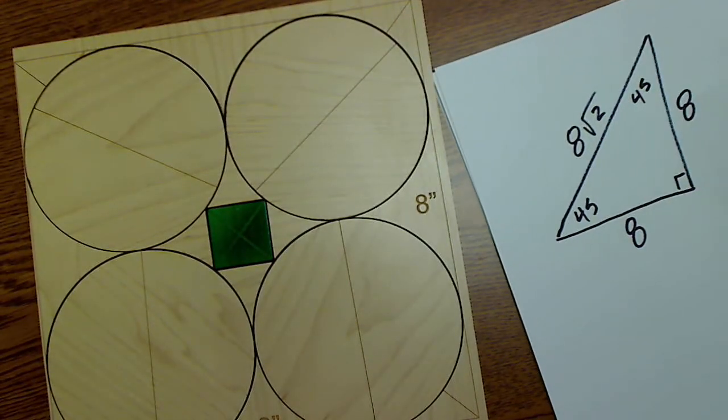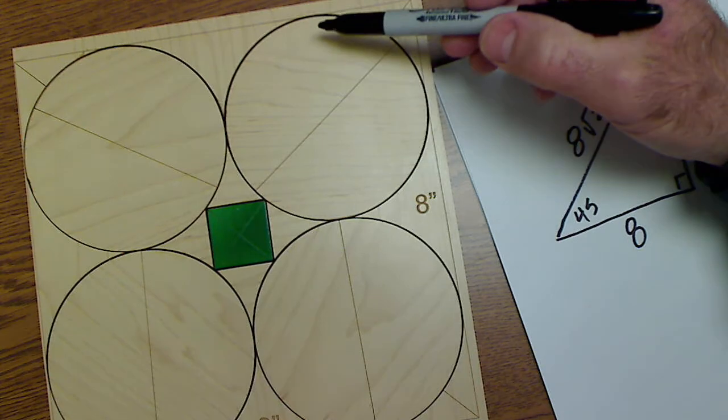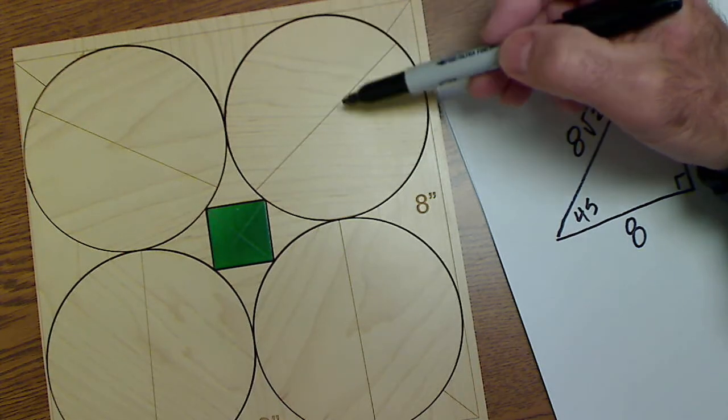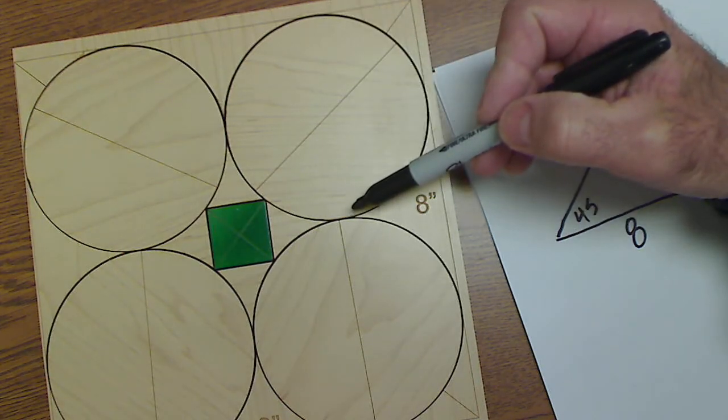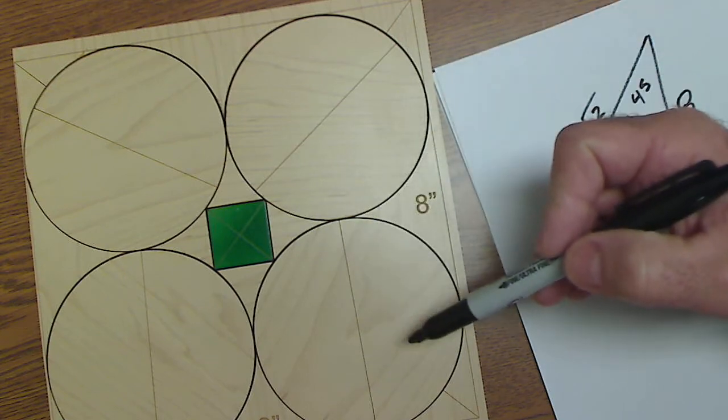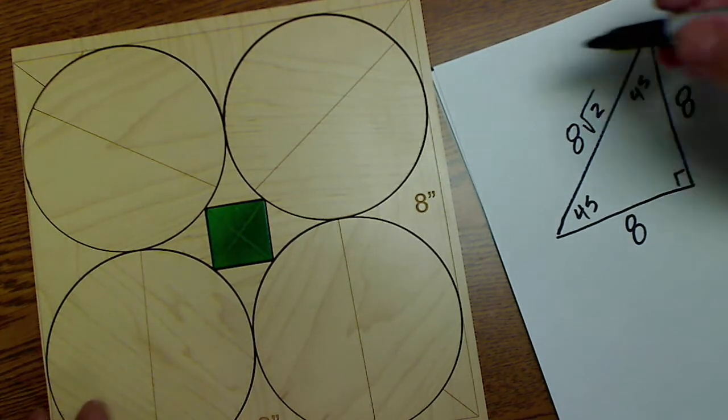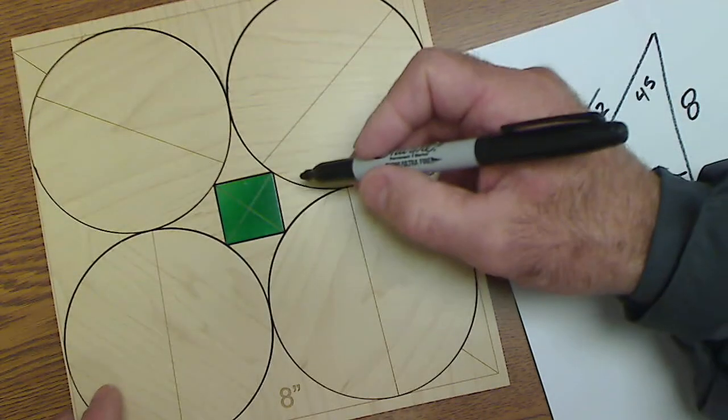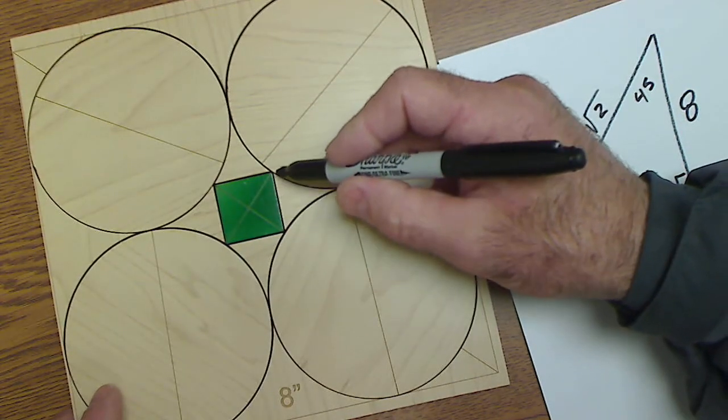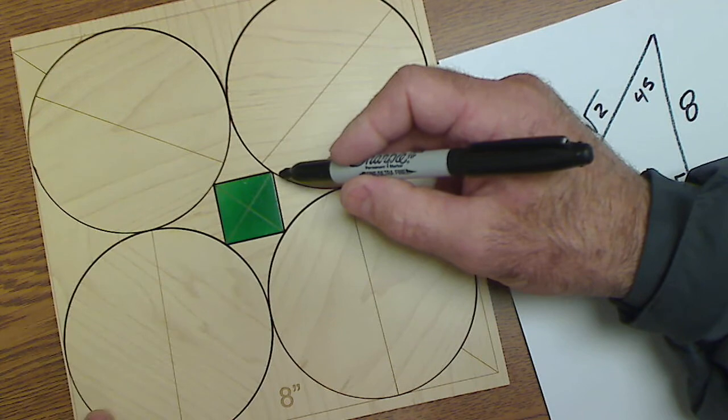And then I know that these circles have a diameter of four. All right, so from there to there is four, there to there is four. So that means this is four to there and another four from here over. So that's eight.